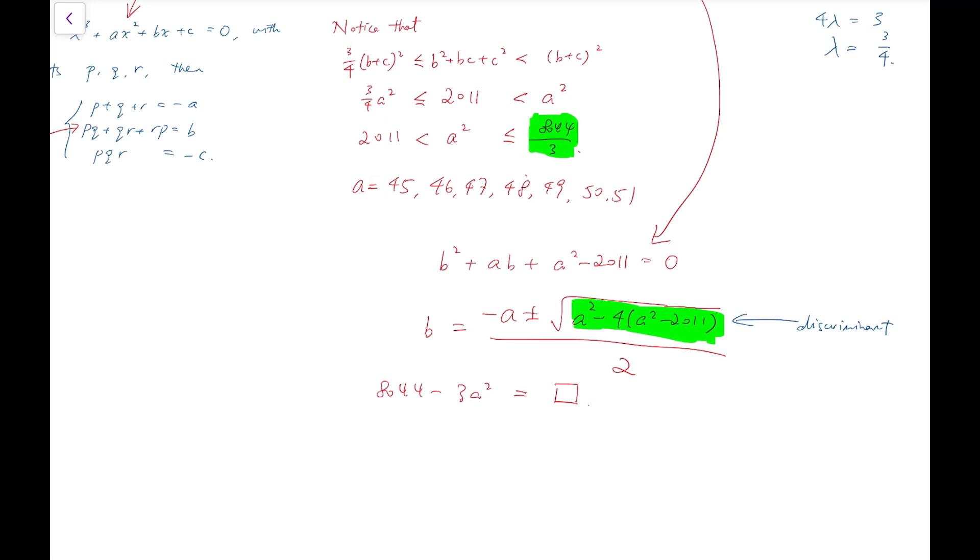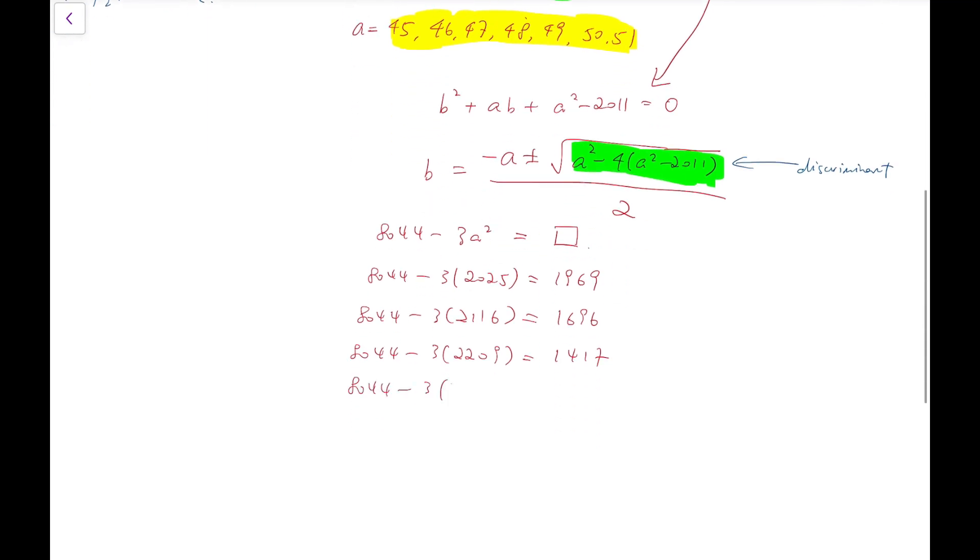So we know that 8044 minus 3a squared must be a perfect square. So now what we're going to do is test these 7 numbers, 45 up to 51, and see whether any of them, after putting into 8044 minus 3a squared, can become a perfect square. So we test one by one. 45 squared is 2025, and the difference is 1969, not a square. 8044 minus 3 times 2116 is equal to 1696, again not a square. 2209, the difference is 1417, again not a square. 2304 gives 1132, again not a square.